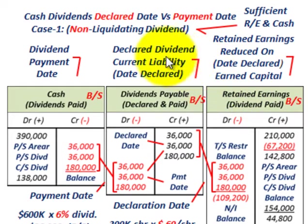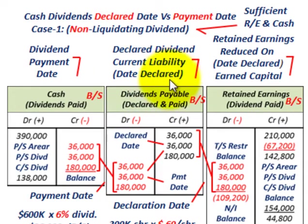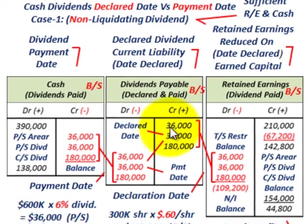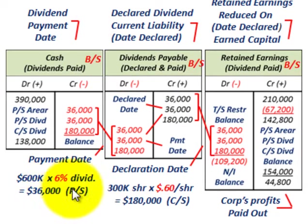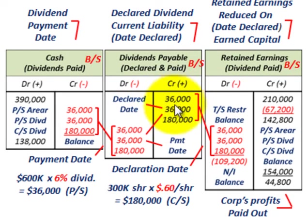Because it's a non-liquidating dividend, we're going to have a reduction in our retained earnings. Starting with the declaration date — when the dividend is declared — we set up the current liability as dividends payable. We credit our dividends payable for the preferred stock and common stock dividends. For preferred stock: $600,000 at a 6% dividend rate equals $36,000 per year, and that's over two years — one year in arrears plus the current year's dividend — so we credit dividends payable for $36,000 for the preferred stock.